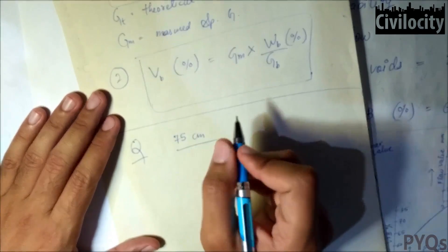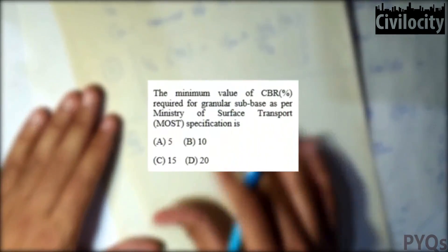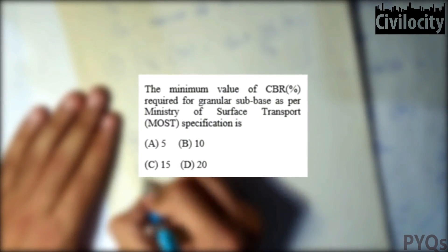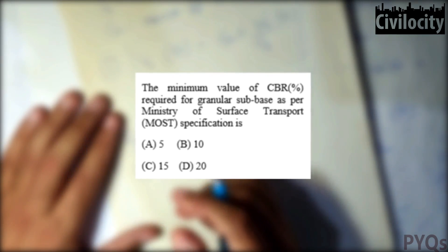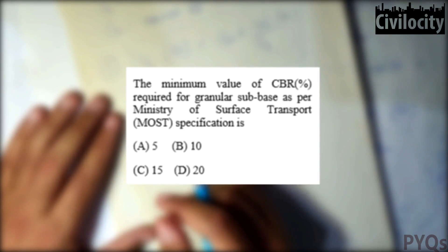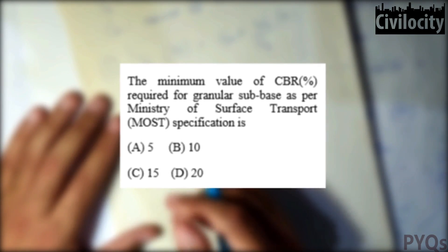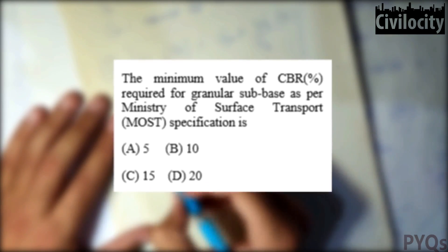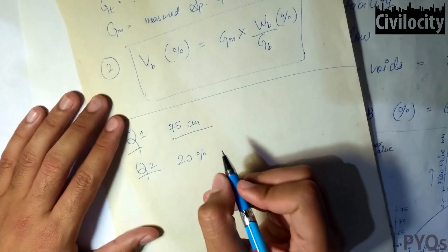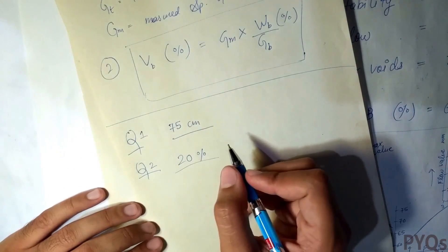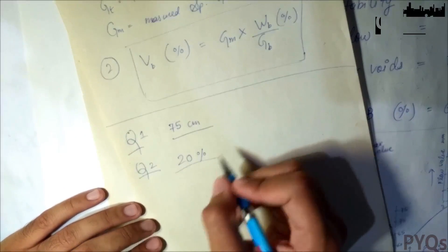Our second question: the minimum value of CBR percent required for granular subbase as per Ministry of Surface Transport specification — is it 5%, 10%, 15%, or 20%? The answer is 20%. The CBR percent required for granular subbase is 20%.